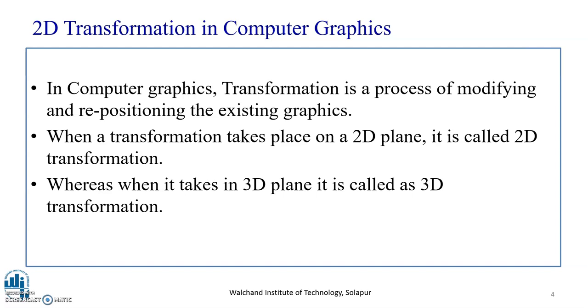As we have seen in the previous lecture on 2D Transformation, there are several types of transformation in Computer Graphics. To name a few: Translation, Rotation, Scaling, Reflection, and Shearing.